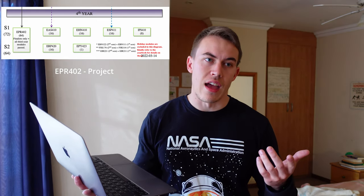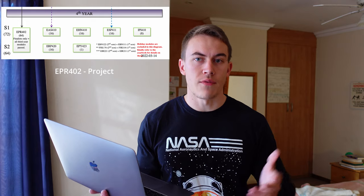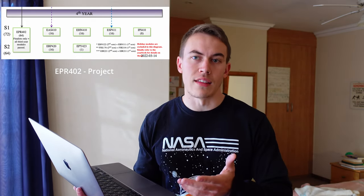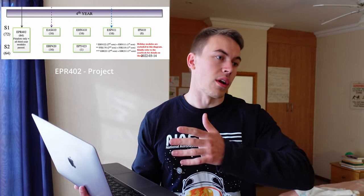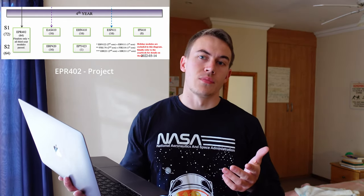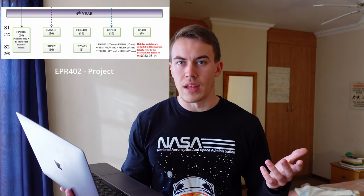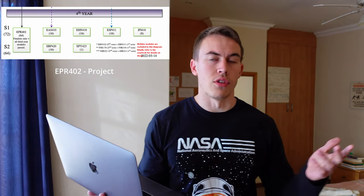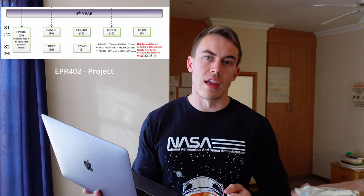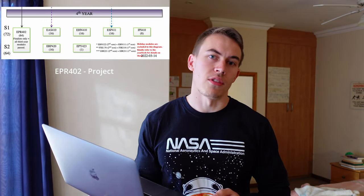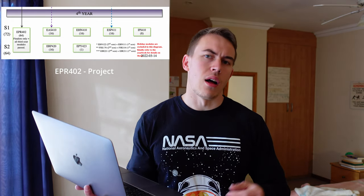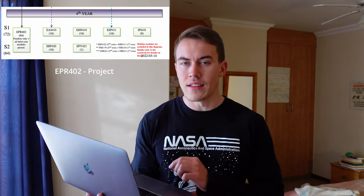The main big module for final year computer engineering is EPR, the project. This involves taking a complete engineering project right from the design phase through to implementation, testing and reporting. Basically the whole year you spend working on this monstrous 64-credit module. You get a problem at the beginning of the year and have to implement an engineering solution towards the end of the year, then report and give a big presentation on it.